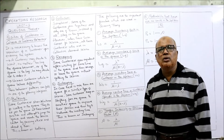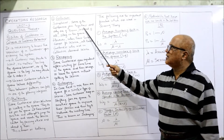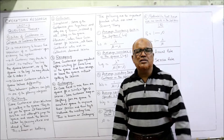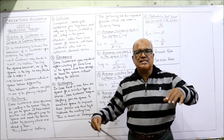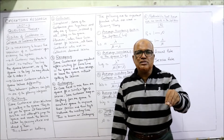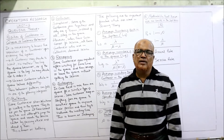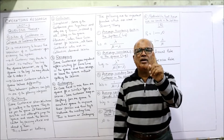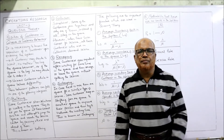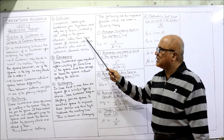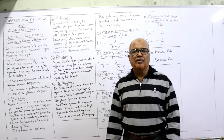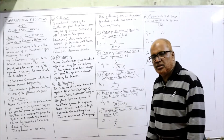The next behavior is collusion, meaning combining. Sometimes some customers join together and only one of them stays in the queue instead of all. For example, suppose five friends go to get a movie ticket — instead of all five standing in the queue, only one stands while the others wait separately. When the turn comes, everybody joins and says 'we are with him and we also want the service.' This is called collusion.